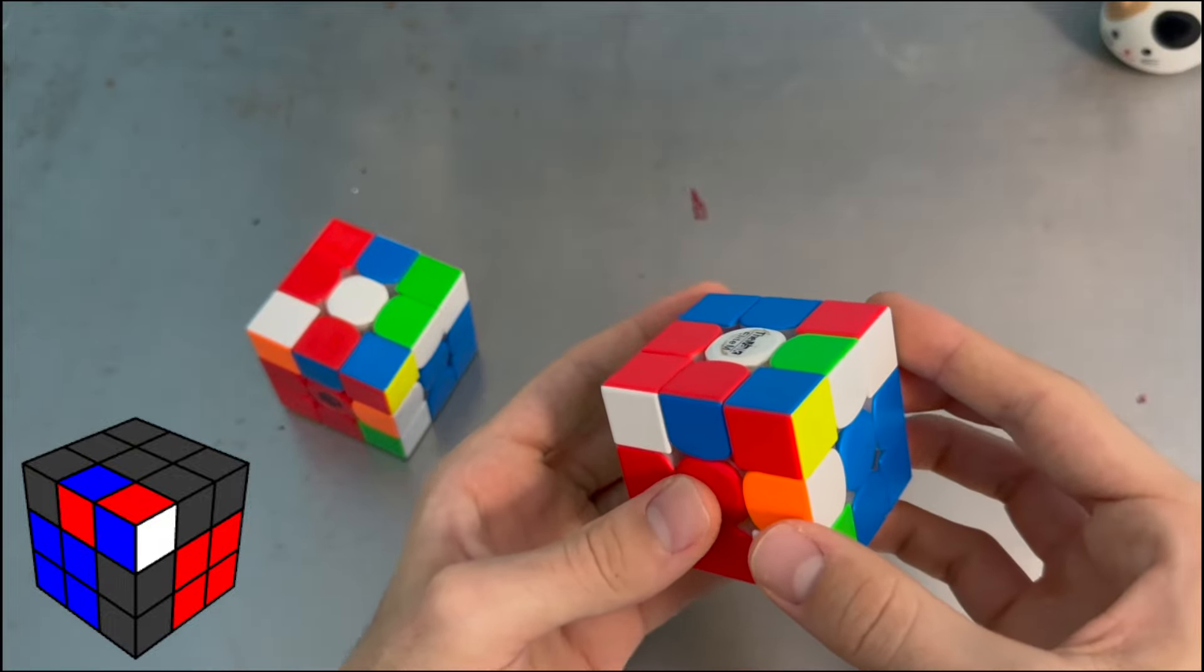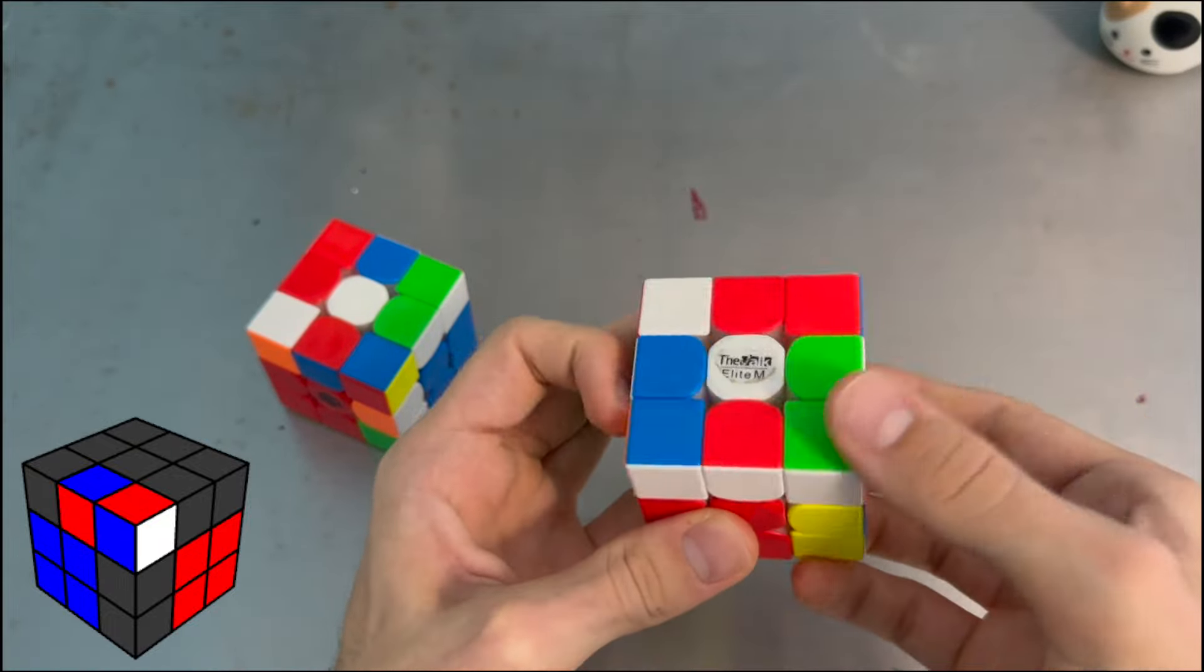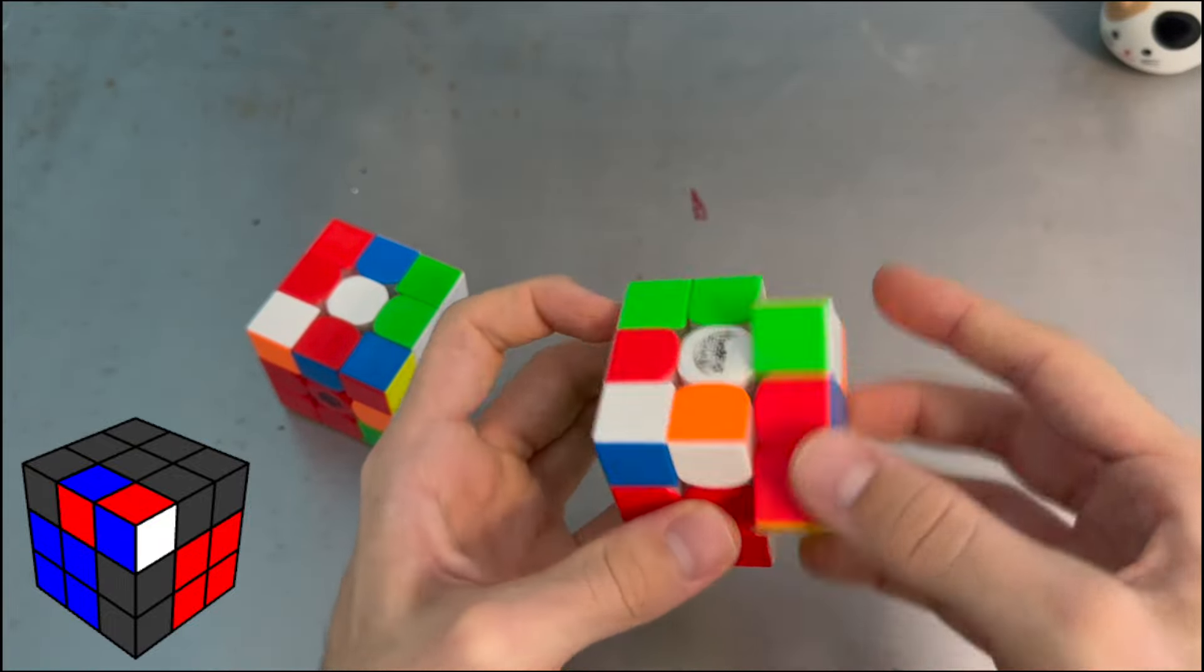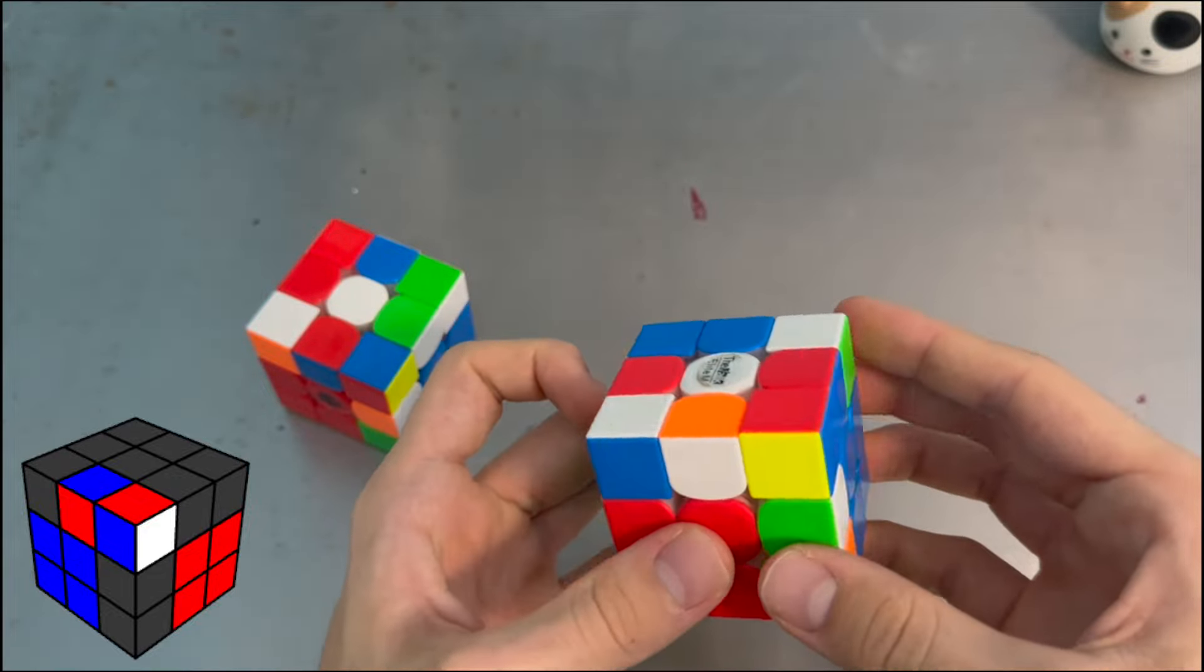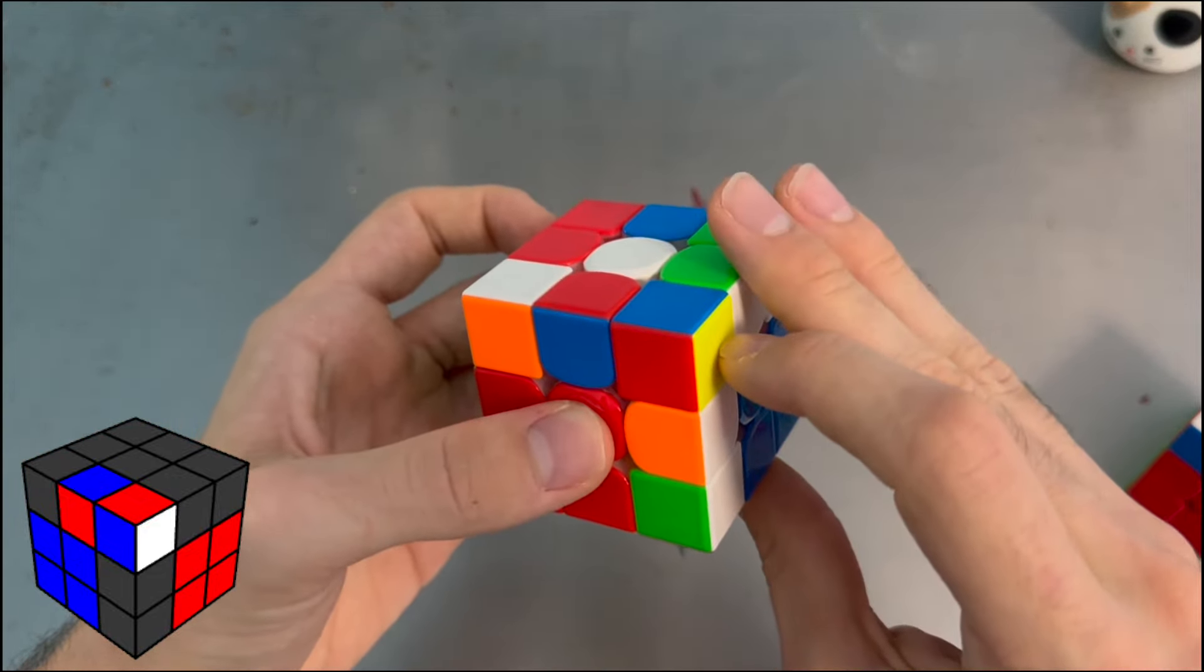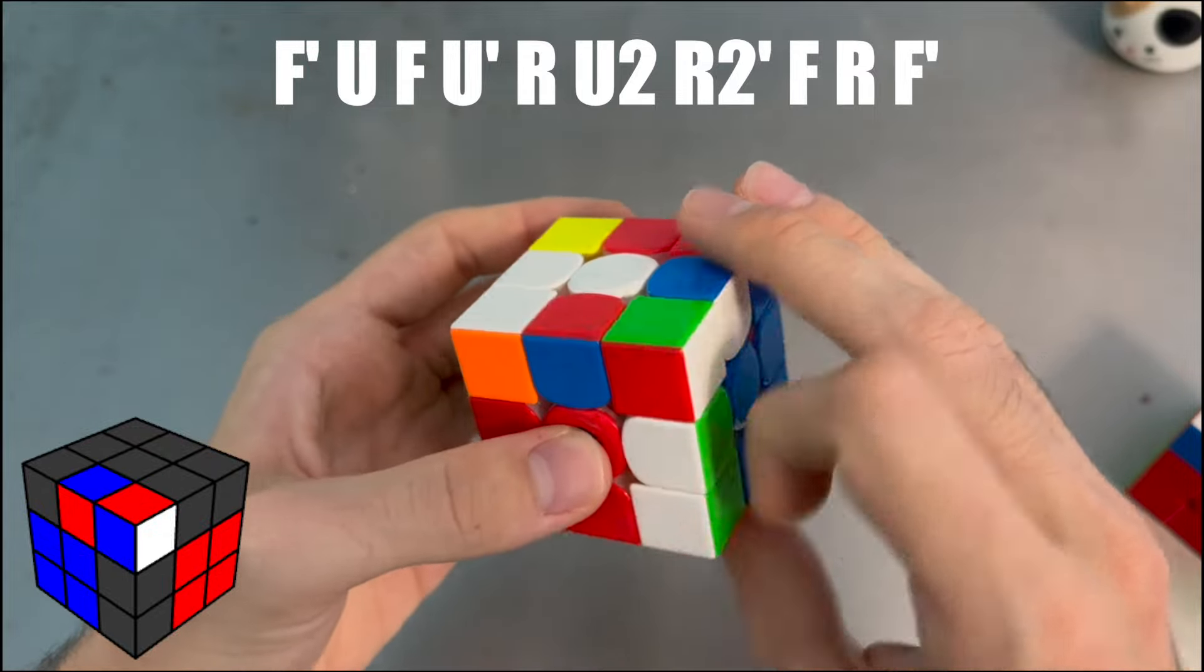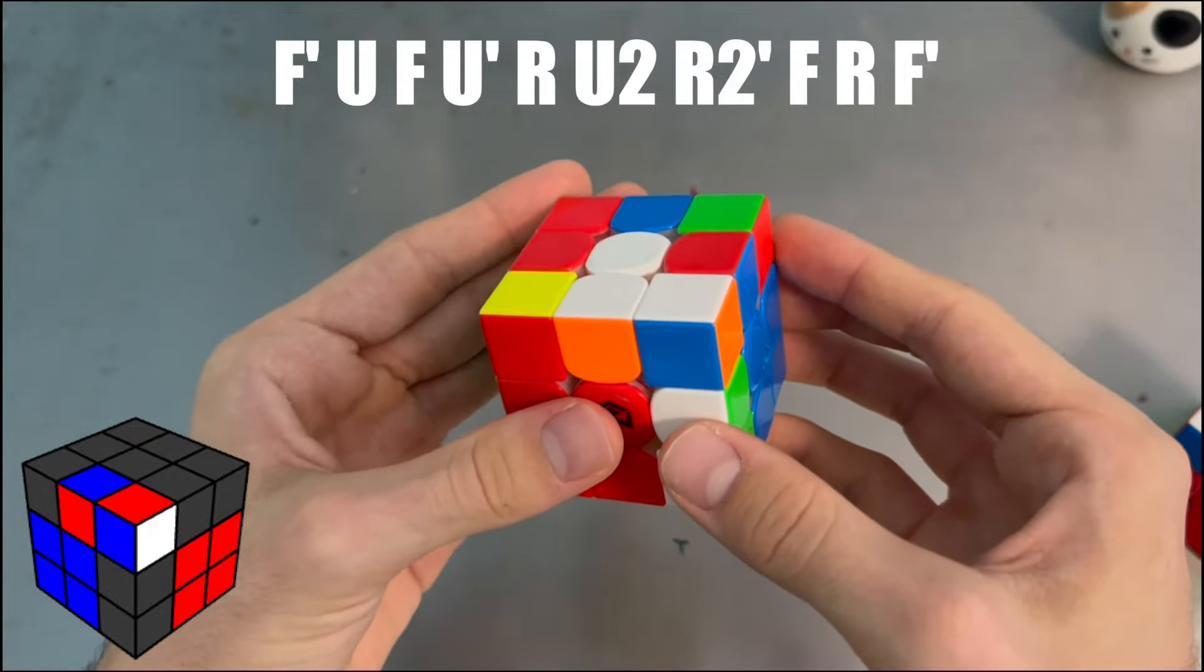For case number one, you'd normally do something like this and you could either insert it normally or do a sledge, but for this one you want to take it out with a F U F and then do this.